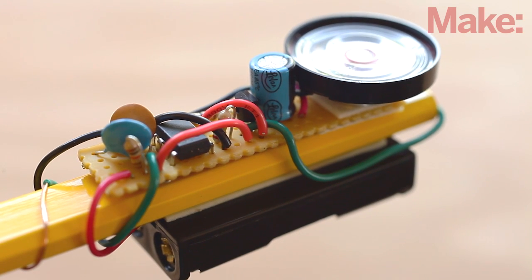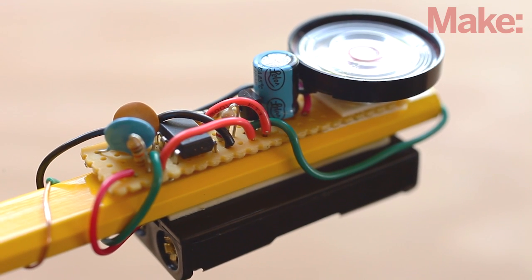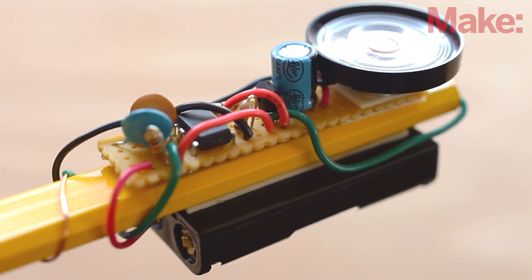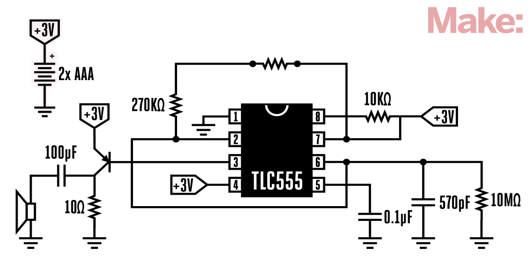The Drawdio circuit is based on the classic 555 timer chip, but we'll be using a TLC 555 timer because it operates on 3 volts, where the original 555 requires at least 4.5 volts.